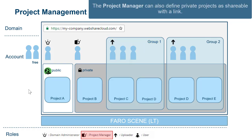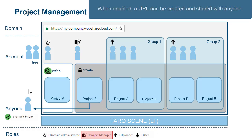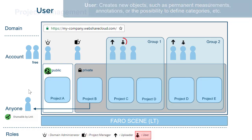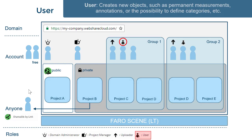The Project Manager can also define private projects as shareable with a link. When enabled, a URL can be created and shared with anyone. A WebShare account is not required — anyone with this link can access it. The User role creates new objects, such as permanent measurements, annotations, or the possibility to define categories, etc.